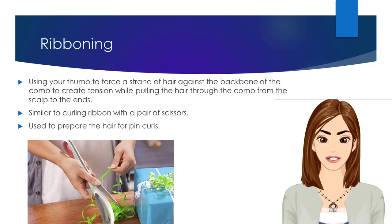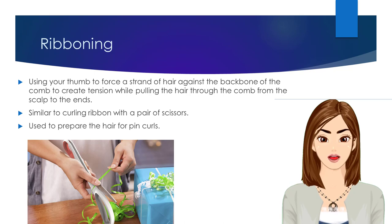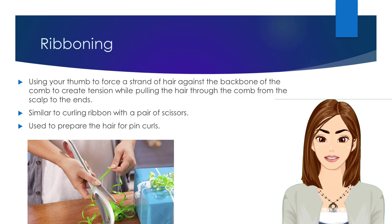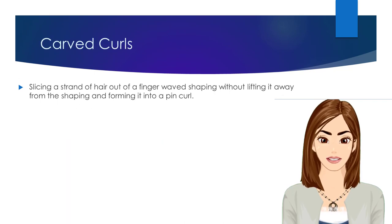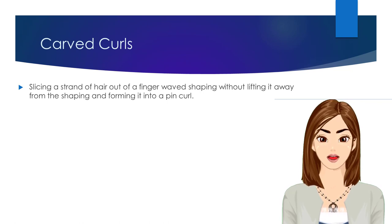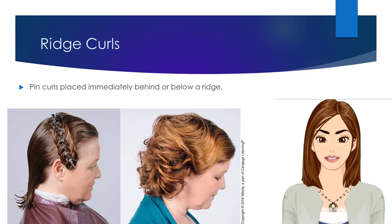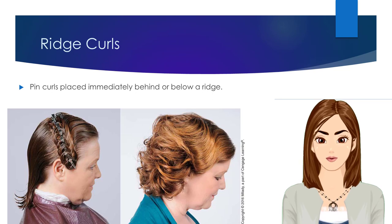Ribboning is the process of using your thumb to force a strand of hair against the backbone of the comb, to create tension while pulling the hair through the comb from the scalp to the ends. Ribboning the hair is similar to curling ribbon with a pair of scissors. This technique is used to prepare the hair for pin curls. Carved curls are created by slicing a strand of hair out of a finger-waved shaping, without lifting it away from the shaping, and then forming it into a pin curl. Ridge curls are carved pin curls that are placed immediately behind or below a ridge.